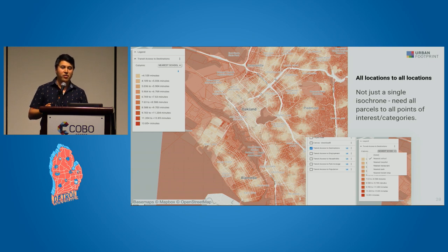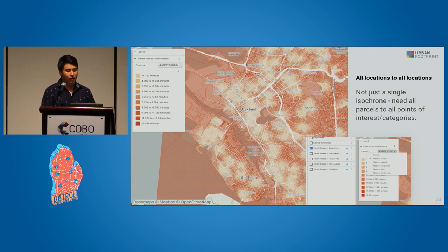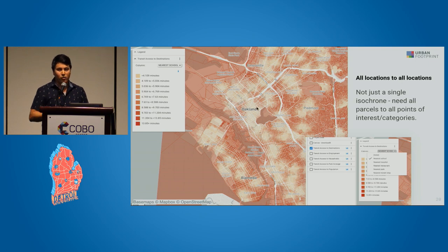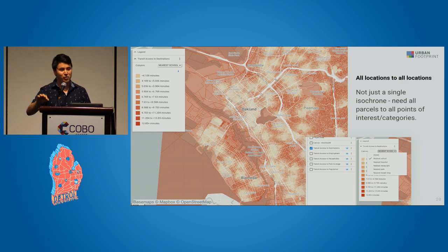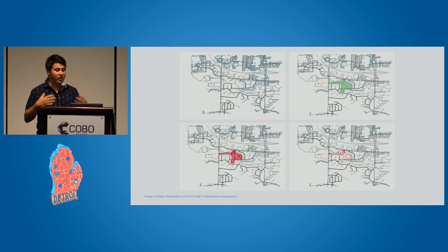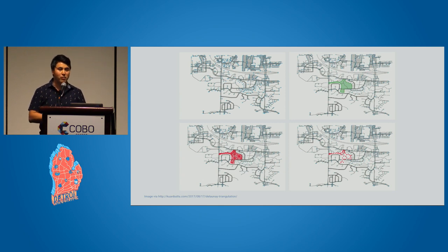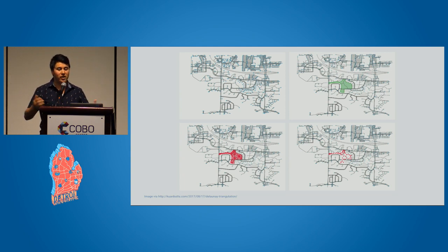What you want is not the performance of a single parcel in a region — you want the performance of all parcels relative to all other parcels. Here you have a choropleth of all parcels in Oakland and their proximity to the nearest school. You want to know how far away relative to all other parcels a given parcel is from a given school. For something like parks or complex geometries, we need to disaggregate those using Delaunay triangulation — break up large geometries into a subset of shapes and apply that park acreage to the nearest node.